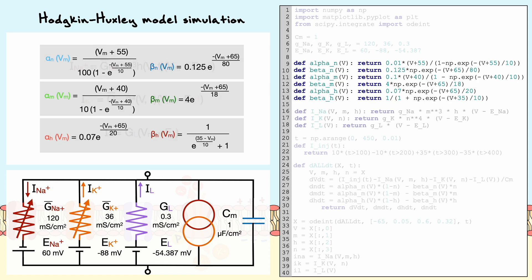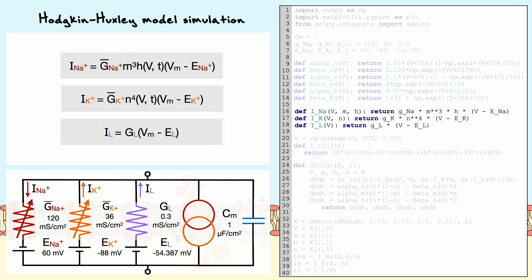Afterwards, we can establish the equations for the sodium, potassium, and leak currents. The sodium and potassium equations use the modified versions that we've derived from the probability model.